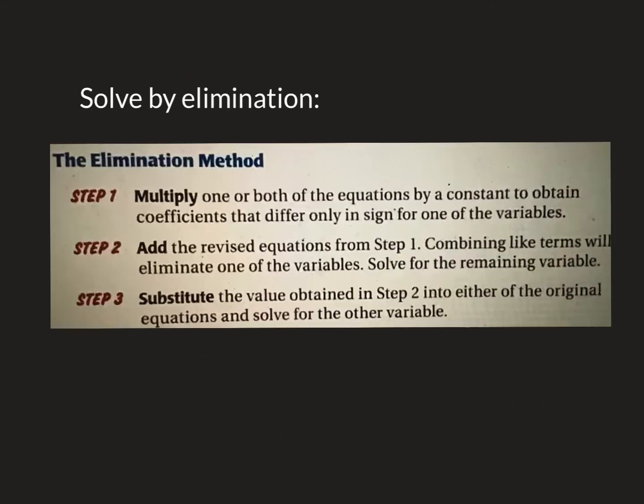Second method is called elimination. Basically, you multiply one or both equations by some constant to get coefficients at different signs so you can cancel them. We're going to add after we multiply, combining like terms. One of the variables will be eliminated, solve for the one that's left. And after you get the first one, we're going to plug it back into one of the original equations and solve for the other one. Again, sounds like a lot, really not.